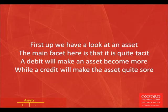First up, we have a look at an asset. A main facet here is that it is quite tacit. A debit will make an asset become more, while the credit will make the asset quite sore.